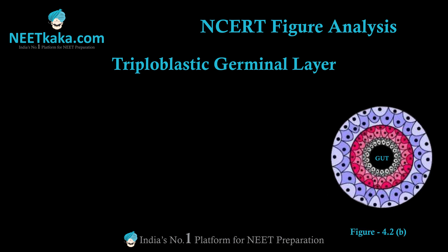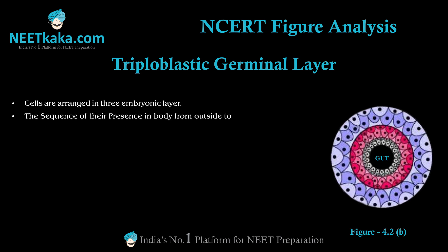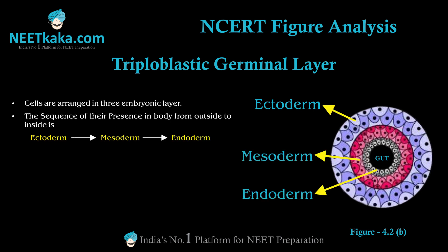In figure 4.2b, which shows triploblastic organization, cells are arranged in three embryonic layers. The sequence of their presence in the body from outside to inside is ectoderm, mesoderm, and endoderm. And the sequence of their origin is ectoderm, endoderm, and mesoderm.